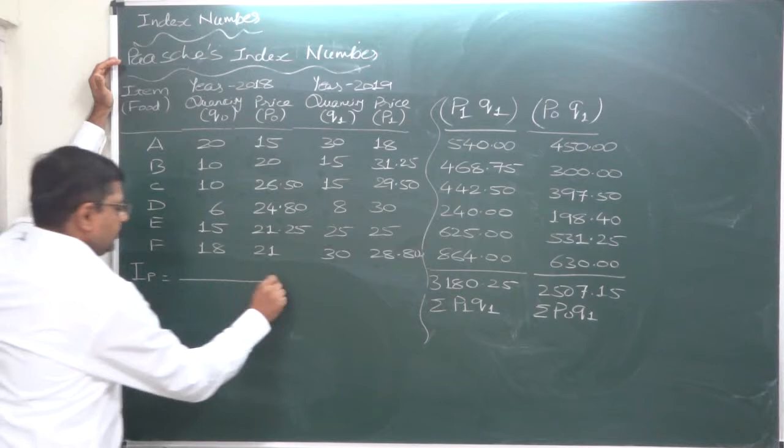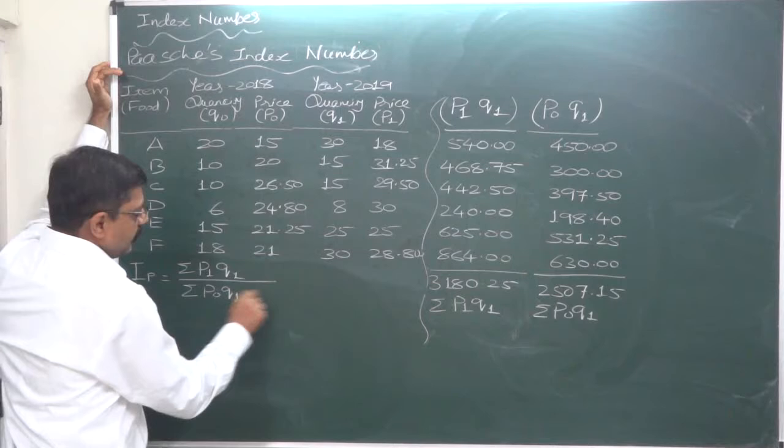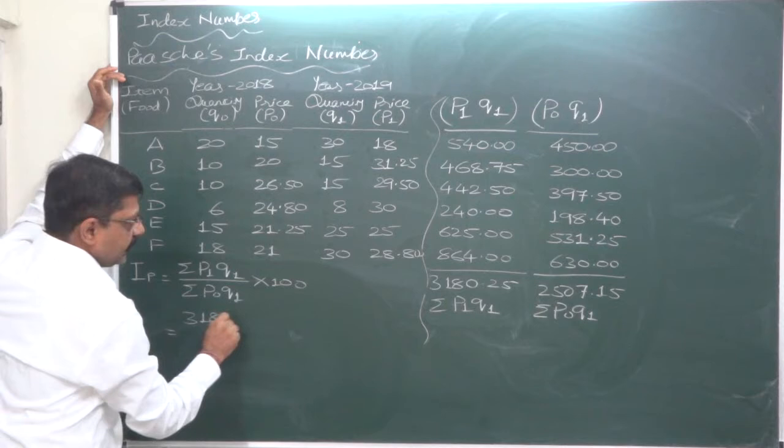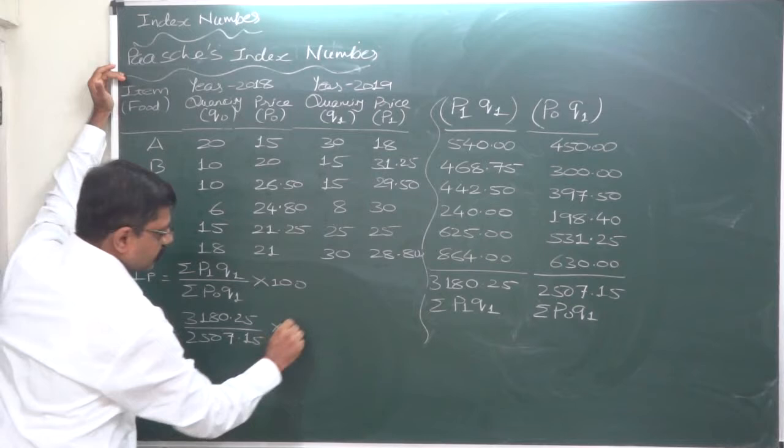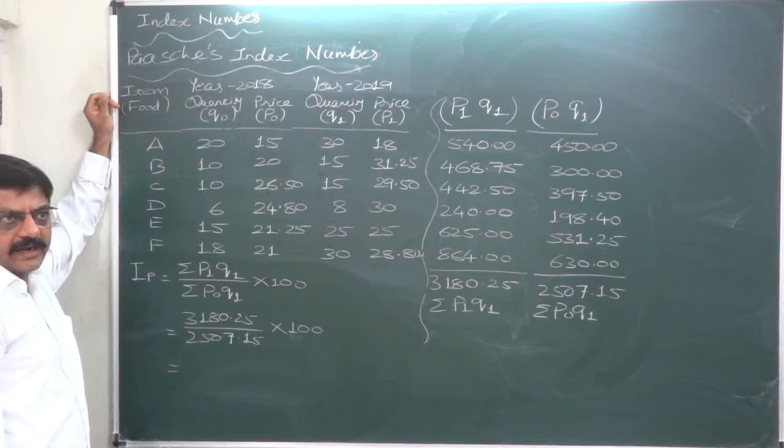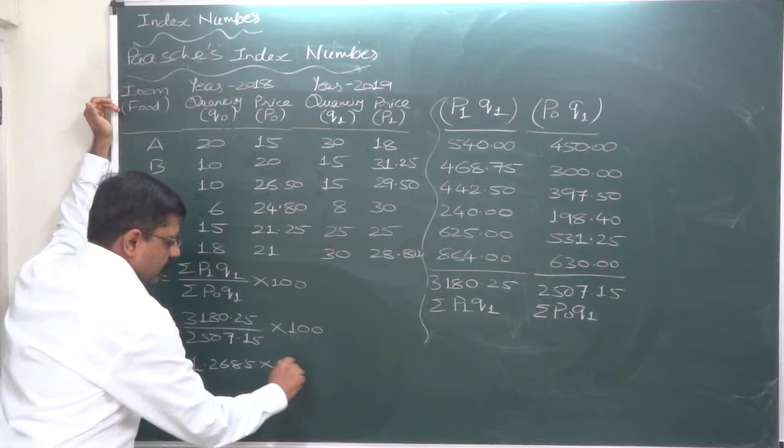Let's calculate Paasche's index number: sigma P1Q1 divided by sigma P0Q1 into 100. Substitute both these values: 3180.25 divided by 2507.15, all into 100. First let's calculate the fraction: 1.2685, which gives us 126.85.